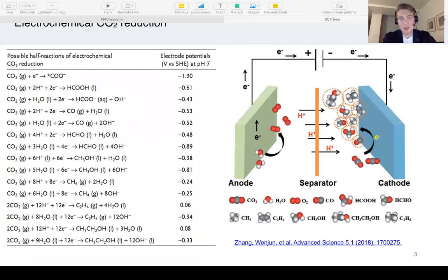But the main problem is that carbon dioxide molecules are very inert and stable because the carbon atoms in CO2 are at the highest oxidation state, plus 4. Therefore, it's necessary to develop efficient electrocatalysts for carbon dioxide reduction processes.